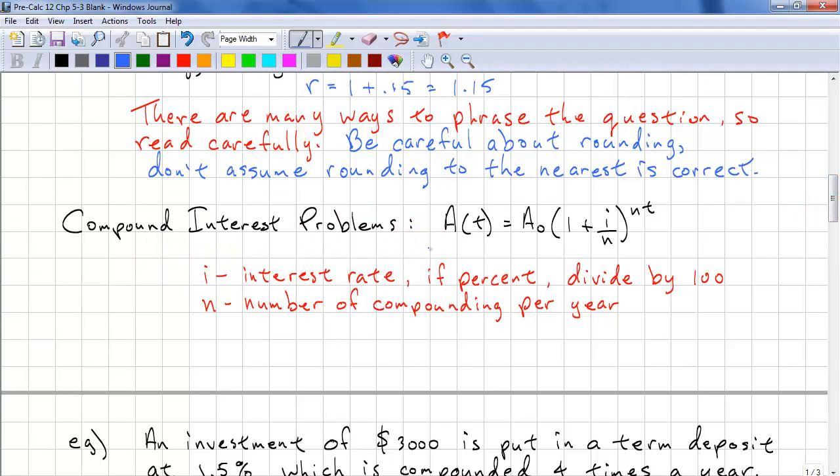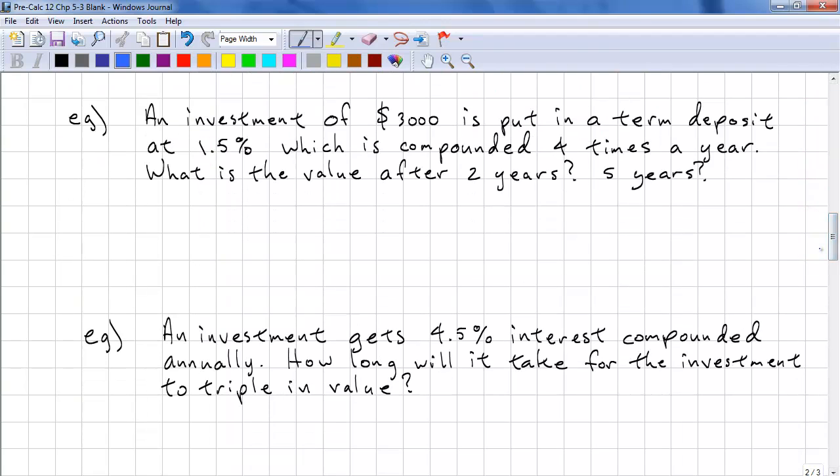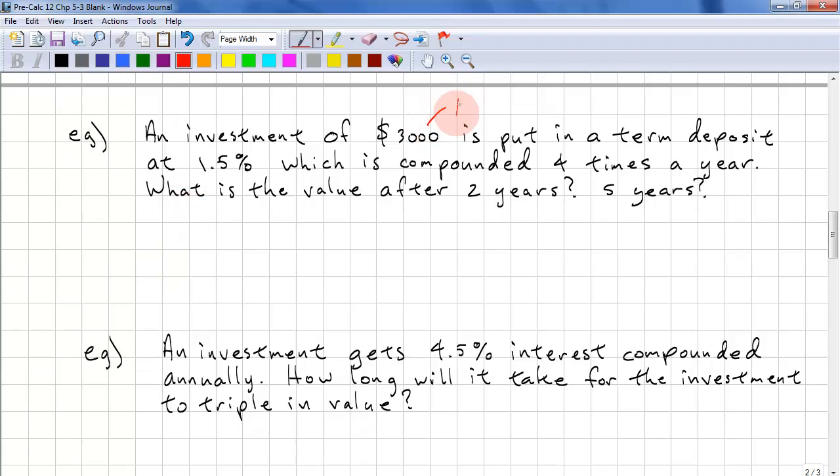In compound interest problems, we have A of t, A meaning the amount. We have A naught times 1 plus i over n in brackets raised to the power of nt. Where i is the interest rate. And usually that's a percentage. So we need to divide that by 100. n is the number of compoundings per year. So let's look at an example. An investment of $3,000 is put into a term deposit at one and a half percent, which is compounded four times per year.